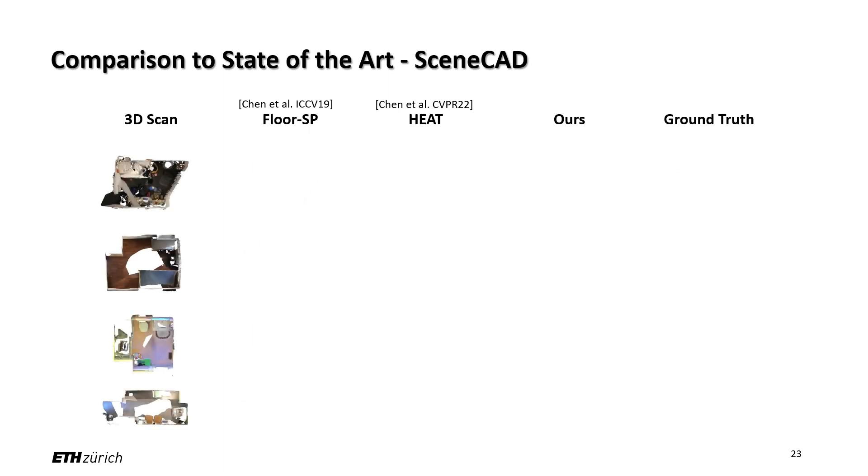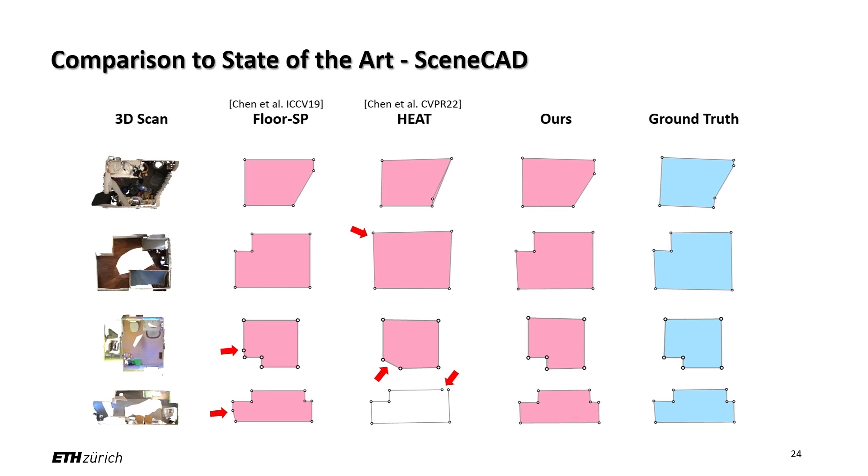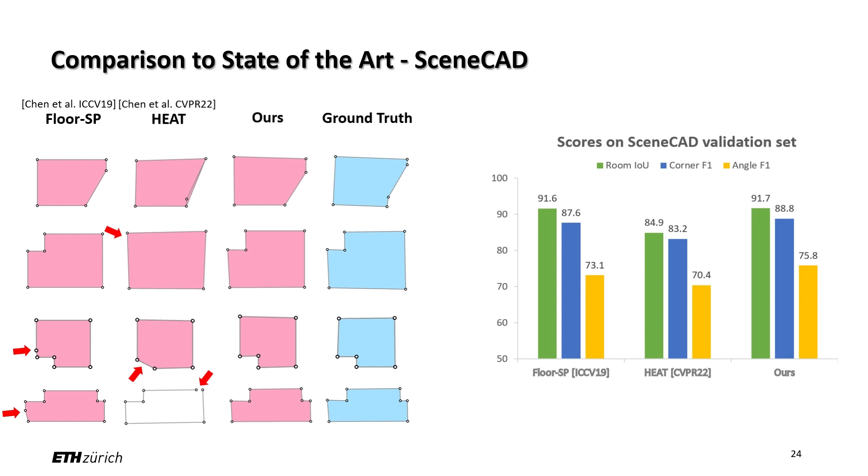We also evaluate on another dataset, SceneCAD. When the input point cloud is sparse, HEAT suffers from missing corners and edges. FloorSP tends to produce redundant corners. By contrast, our method is more robust in these cases. We also achieve the highest room IoU at F1 scores for corner and angle, as well as the fastest inference speed.